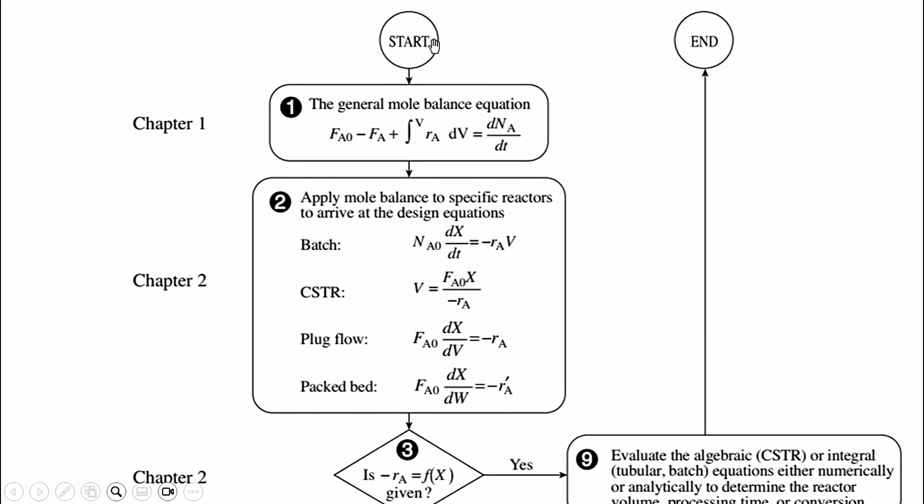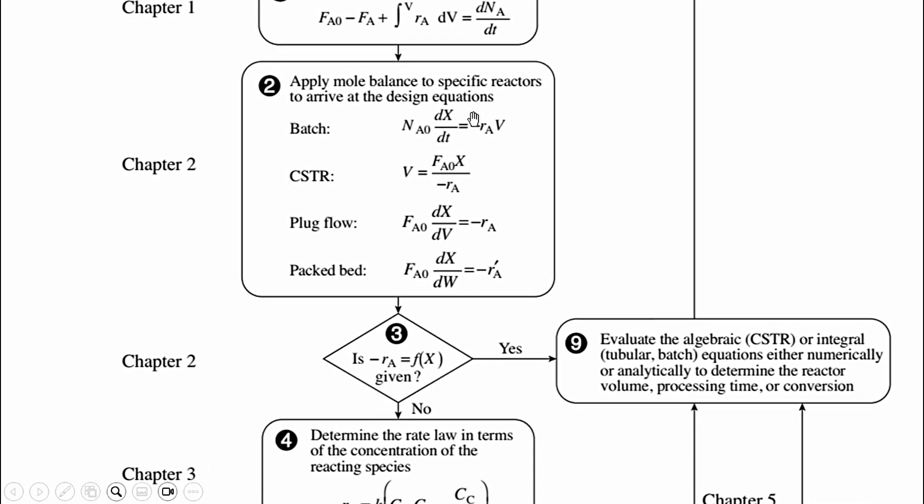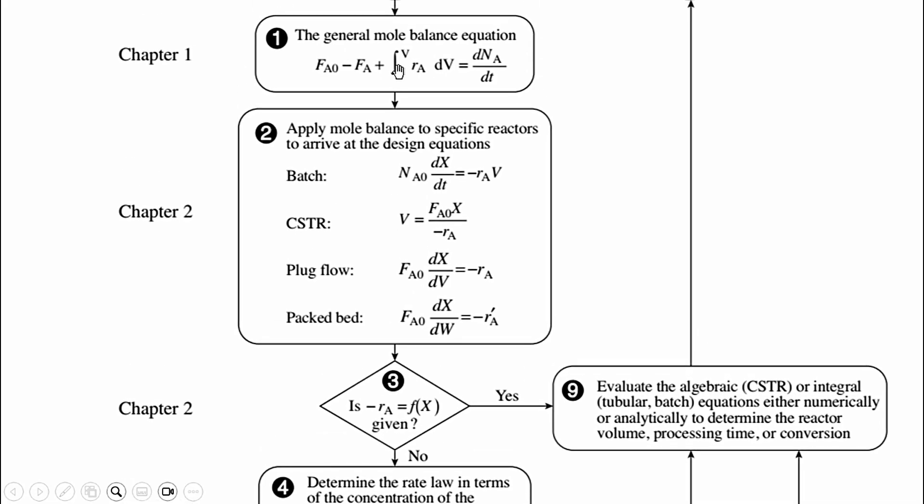We will go to all the steps one by one. Number one is the start and we will move to chapter number one which was the mole balance. So the general mole balance equation: FA0 minus FA plus integral 0 to V, RA dV equals dNA/dt. Using this equation we have derived equations for four industrial reactors: batch reactor, CSTR, PFR, and PBR. Then we introduced the concept of conversion in chapter number two, which is again related to building block number one. We have derived different equations for these four reactors and we call these the design equations.